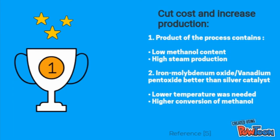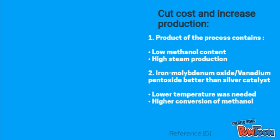Iron molybdenum oxide or vanadium pentoxide is better than silver catalyst because a lower temperature is needed and higher conversion of methanol is achieved.